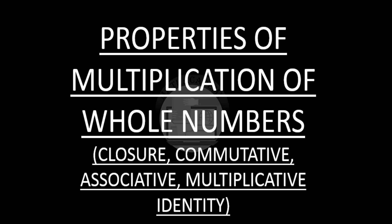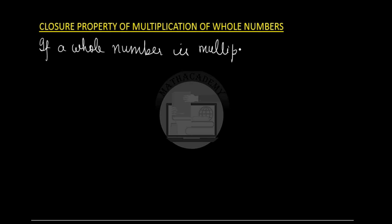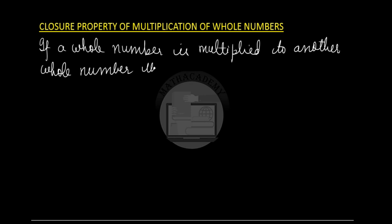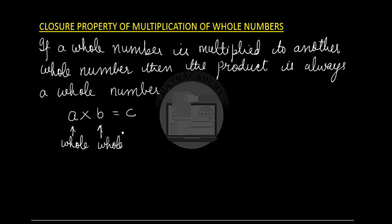The closure property of multiplication of whole numbers says that if a whole number is multiplied by another whole number, then the result or product is always a whole number. So the closure property holds good for multiplication. If a whole number a is multiplied by another whole number b, we get the product c, and c will also be a whole number.